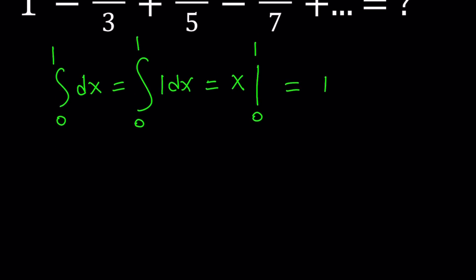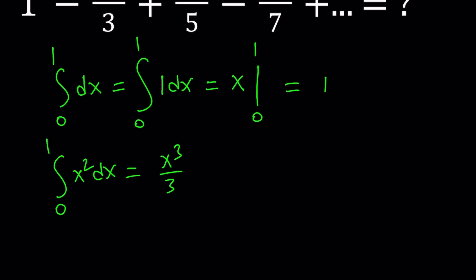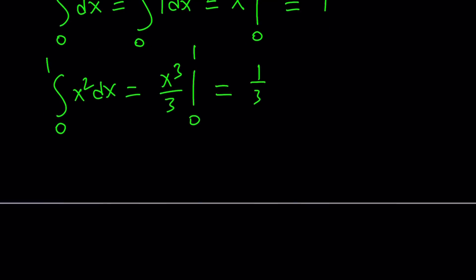We got the first term. Let's go ahead and get the second term. You can think about how to get 1/3 from an integral. We're always going to integrate from 0 to 1. I need to integrate x squared, because the integral of x squared is x cubed over 3. From 0 to 1, that's just going to be 1/3 minus 0, which is 1/3.